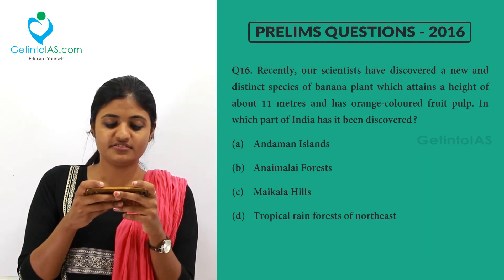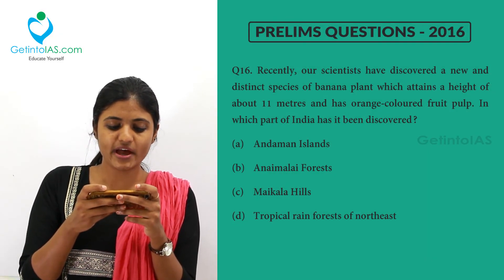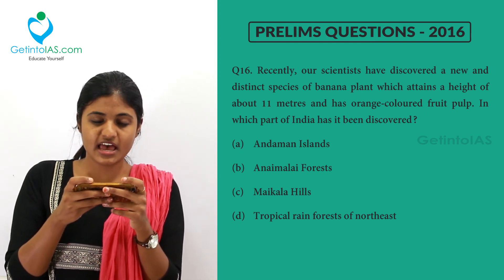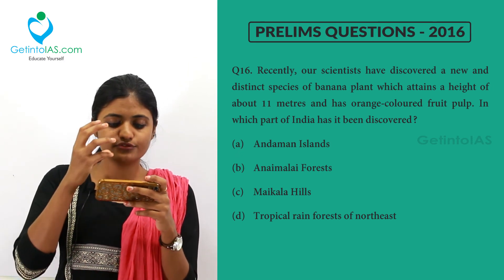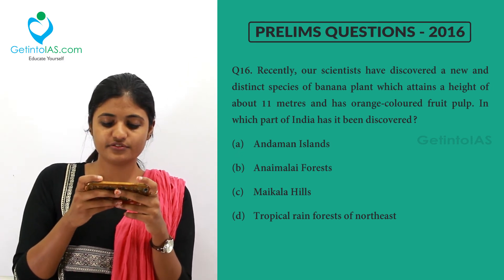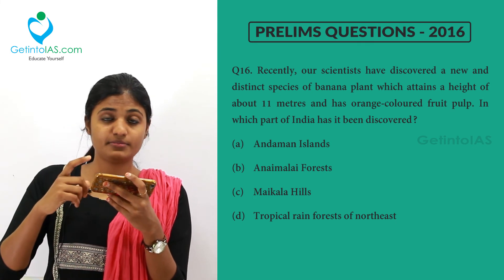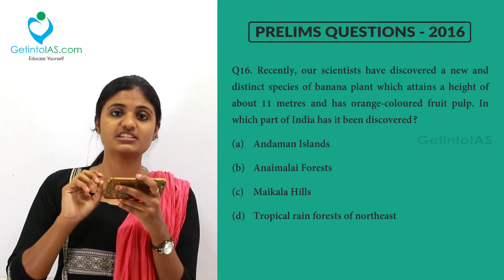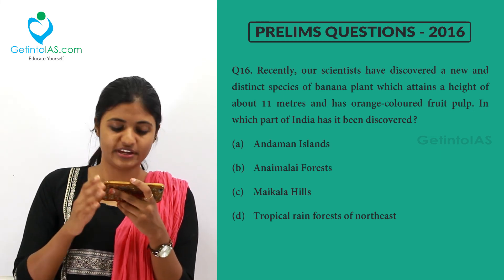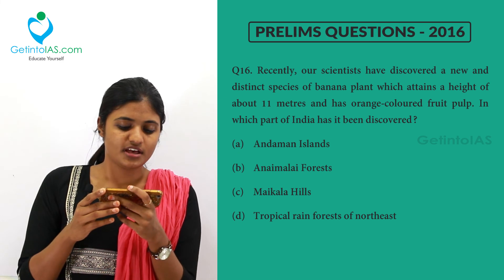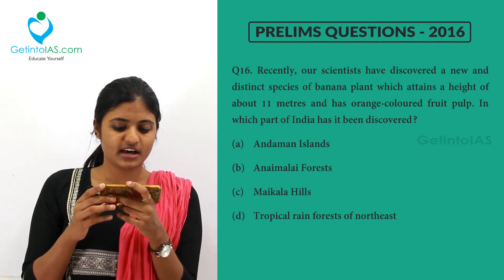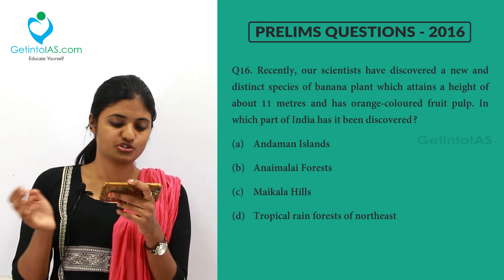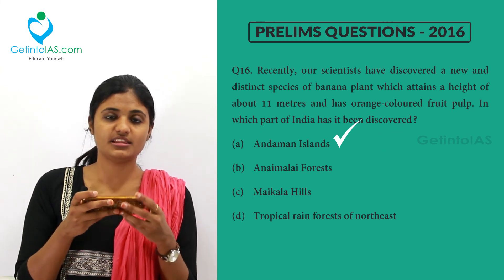Scientists recently discovered a new and distinct species of banana plant that attains a height of about 11 meters and has an orange-colored fruit pulp. The options are Andaman Islands, Annamalai Forest, Maikala Hills, and Tropical Rainforest of North East. The correct answer is the Andaman Islands.